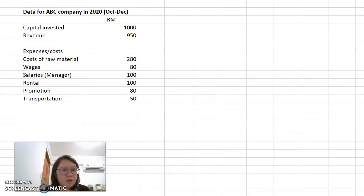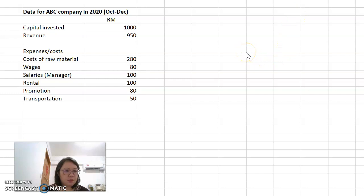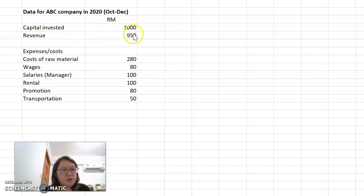This is the data I prepared. For example, for company ABC, which started doing business in October 2020. We want to prepare a report by end of year 2020. The information collected from the business includes: capital invested in the company RM1,000, and revenue — that means the sales of the company — is RM950. At the same time, we have expenses. For example, cost of raw materials is RM280, which is the cost to produce the goods.